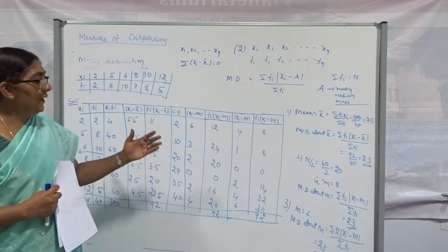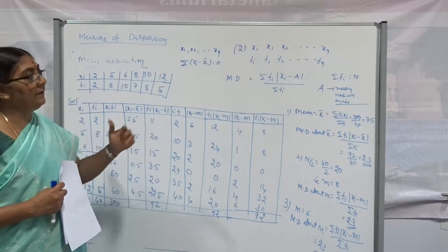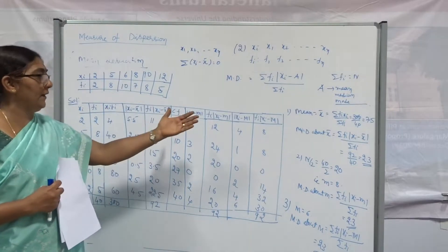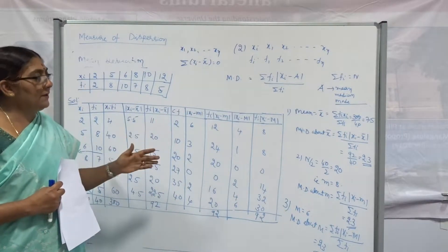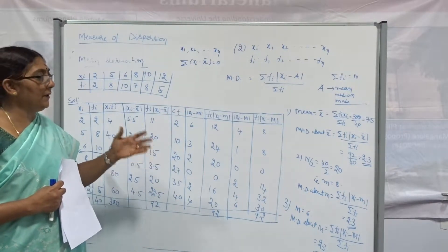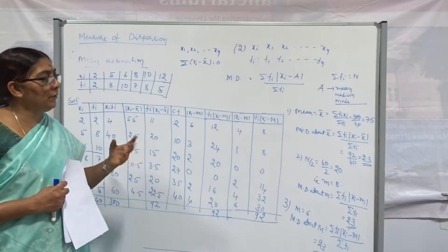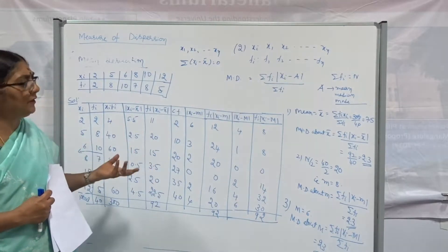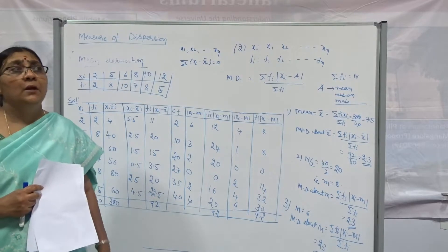Therefore, you see the answer here — the mean is the exact value we get. Based on that, what happens is the answer in all cases — mean, median, mode — above the mean, above the median, above the mean — in all cases we get the same value.